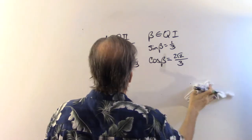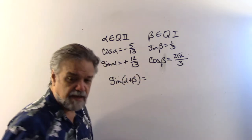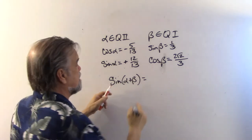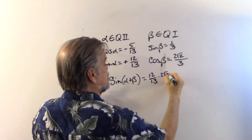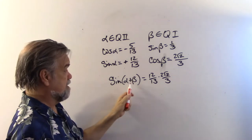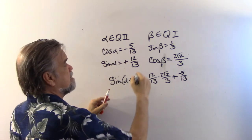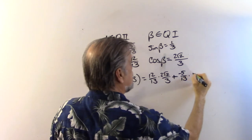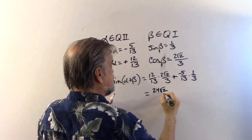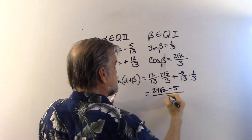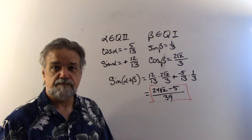So sine of alpha plus beta equals sine α · cosine β plus cosine α · sine β. That's (12/13)(2√2/3) plus (−5/13)(1/3), giving us 24√2 over 39 minus 5 over 39. That is my answer for the sine of alpha plus beta.